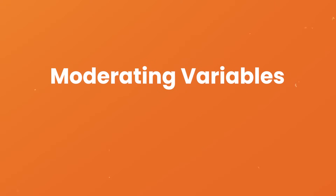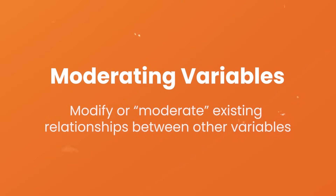It's worth highlighting that while moderators can have an influence on outcomes, they don't cause them per se. Rather, moderating variables modify or moderate the existing relationships between other variables. This means it's completely possible for two different groups with very similar characteristics but different levels of moderation to experience significantly different results from the same experiment.